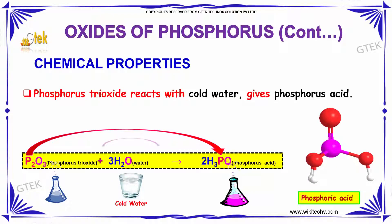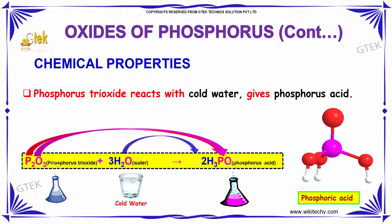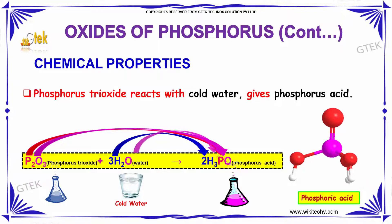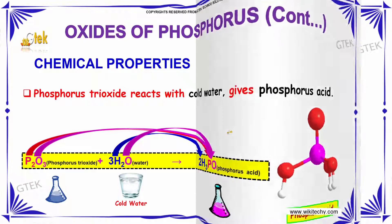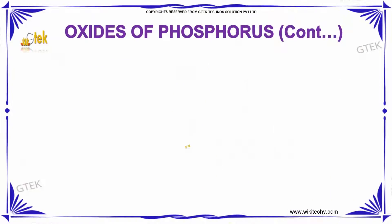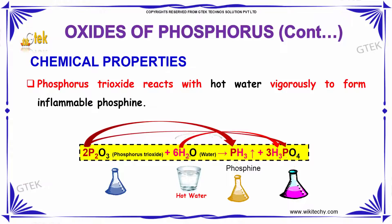If we talk about the chemical properties, Phosphorus trioxide reacts with cold water and gives Phosphorus acid. When reacted with hot water, it forms inflammable Phosphine and Phosphorus acid.